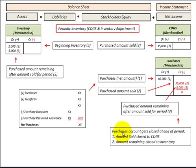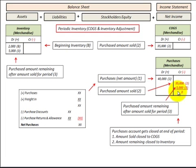So the purchase accounts get closed at the end of the period: the amount sold closes to Cost of Goods Sold, and the remaining amount closes to the Inventory account. We end up with a zero balance in Purchases, starting fresh for the next period.